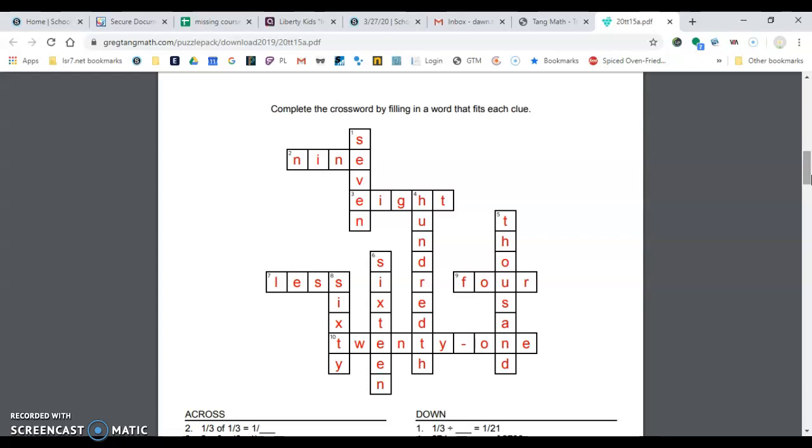Two across is nine, N-I-N-E. Three across is eight, E-I-G-H-T. Seven across is less, L-E-S-S. Nine across is four, F-O-U-R, and ten across is twenty-one, T-W-E-N-T-Y dash O-N-E. So if you got all those correct, give yourself a plus one at the top.